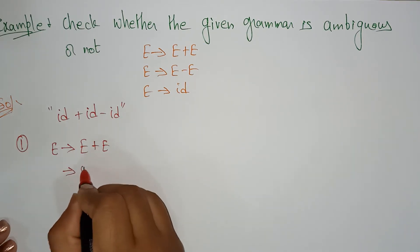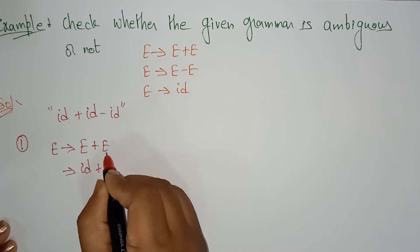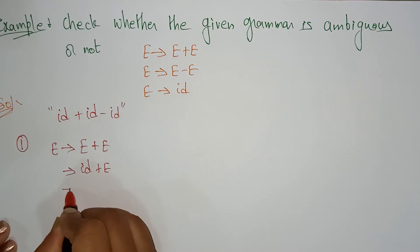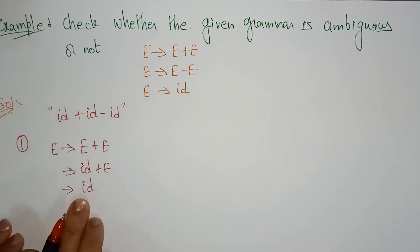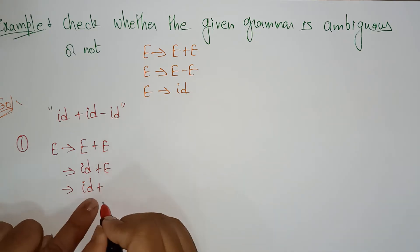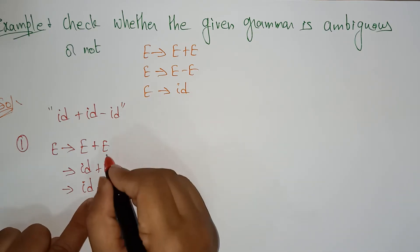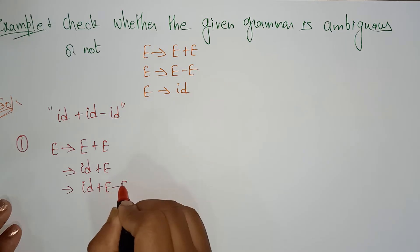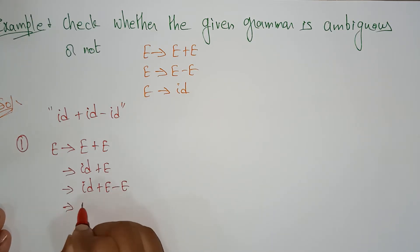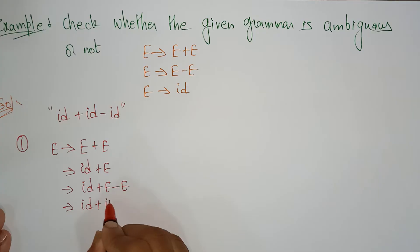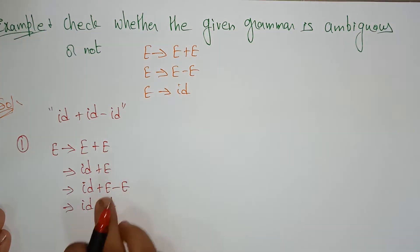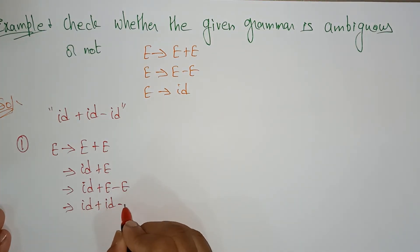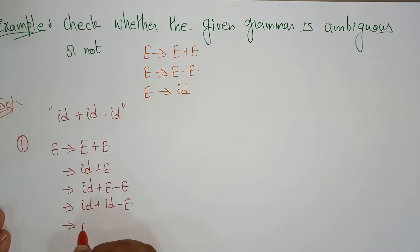In place of e, I can write id. This is a terminal, so don't touch it, and plus is also a terminal. Coming to the non-terminal, this e I replaced with e minus e. Next, I replace the first non-terminal with id because e determines id. So in place of e, I am writing id. And finally, I will get id plus id minus id.